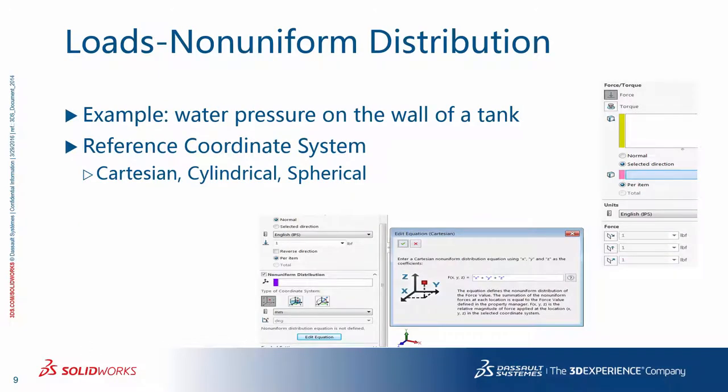In the real world, forces and pressure distributions are mostly non-uniform. In many situations from a simulation point of view, the default uniform distribution is valid, especially if you are looking at the overall behavior. But in some applications, the non-uniform distribution may be significant. An example is water pressure on the wall of a tank, which obviously changes with height. For the input, you define the distribution using a reference coordinate system that could be Cartesian, cylindrical, or spherical, and the respective formula representing the relative magnitude of force applied at the x, y, z location in the selected coordinate system. The summation of the non-uniform force is supposed to be equal to the force value defined in the property manager.